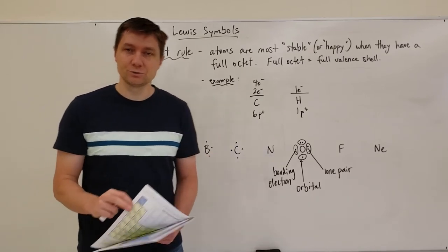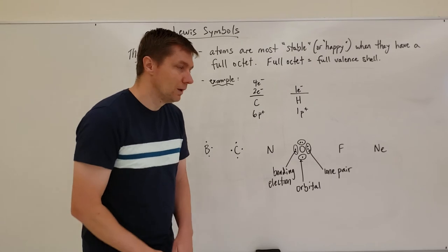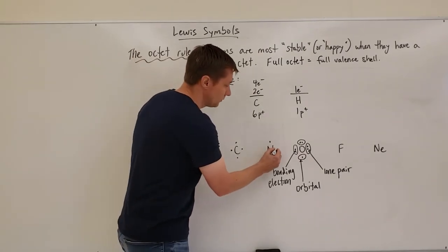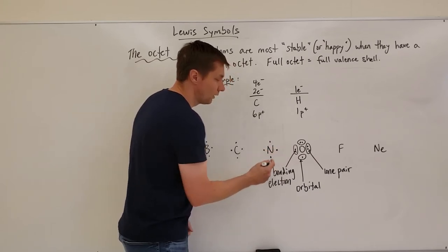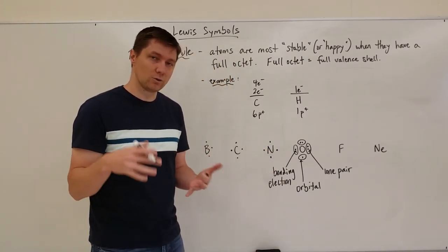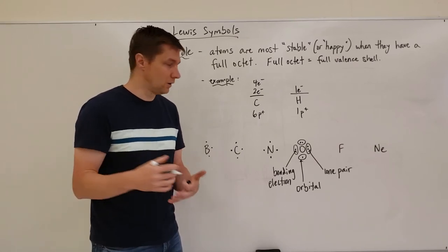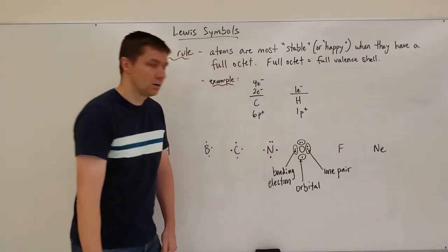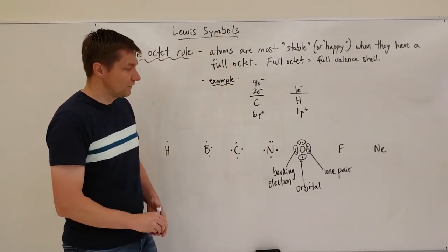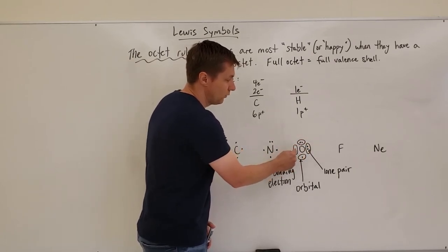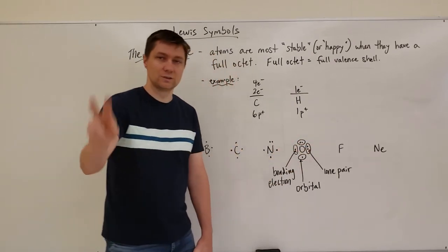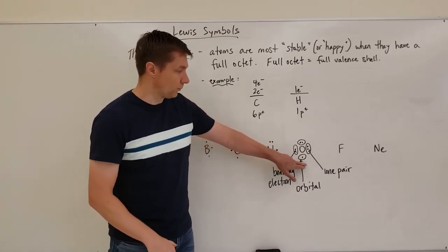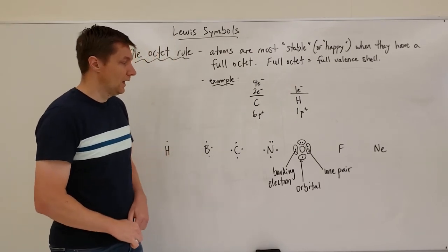For nitrogen, which is in group five with five valence electrons, we fill in: one, two, three, four — and now the fifth electron has to go into an orbital that already has one, since all others are filled. Once all orbitals have at least one electron, we can start pairing them up. For oxygen, we go one, two, three, four, five, six — so two orbitals each have two electrons and two orbitals each have one electron.